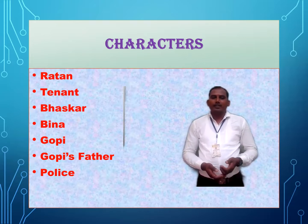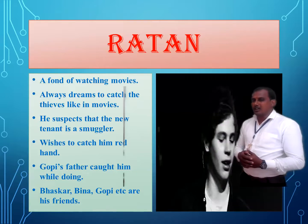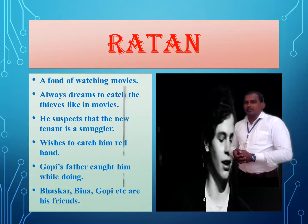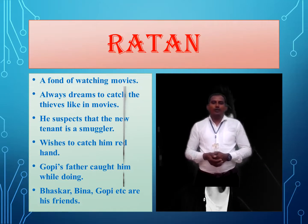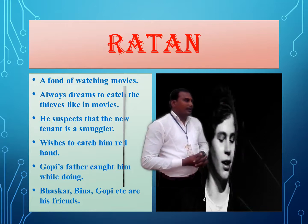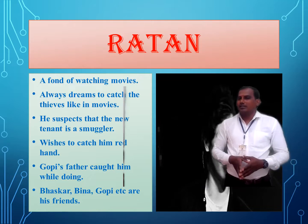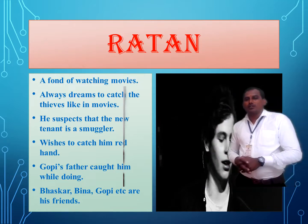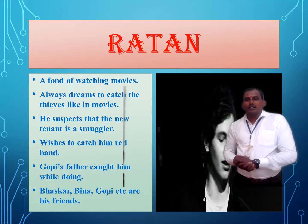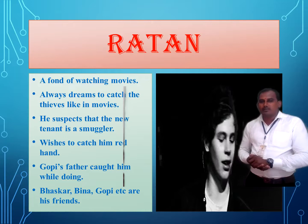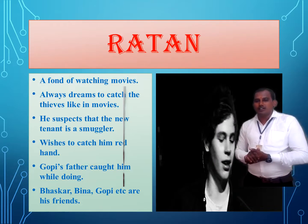Now let us learn about the characters. First one is Ratan. As you can see behind me, he is Ratan. He is a fan of watching movies. He lives in the world of movies, and thinks according to what he has seen in movies. Whatever is going on in the world, he thinks all these are characters of a movie. As a small boy, he doesn't have knowledge of reality. He thinks that everything is going on like a film, and he suspects the new Tenant is a smuggler.